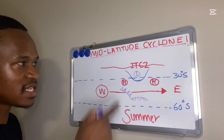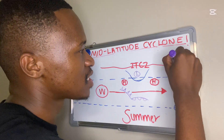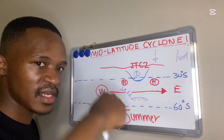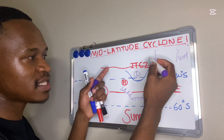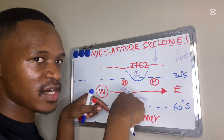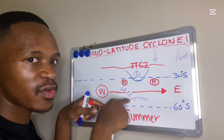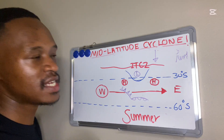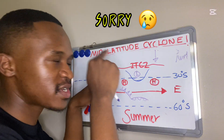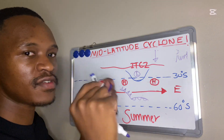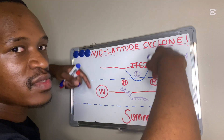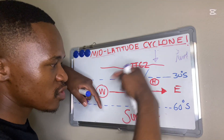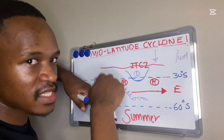In Grade 11, you learn that the ITCZ migrates north in winter, but in summer it migrates south. As it migrates south, our high-pressure belts also migrate south, pushing our mid-latitude cyclone further south. Hence, there is no effect on South Africa in summer — because the ITCZ migrates south, pushing our pressure belts and mid-latitude cyclone further south.